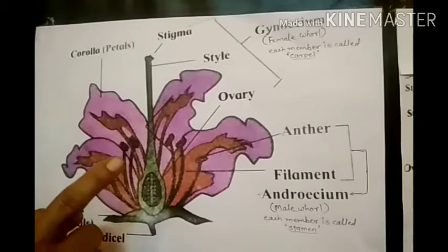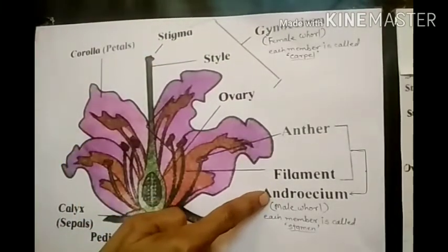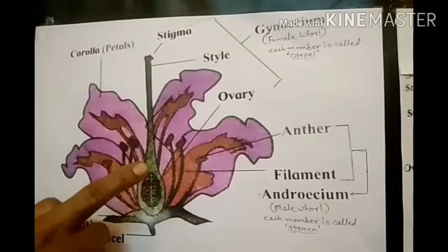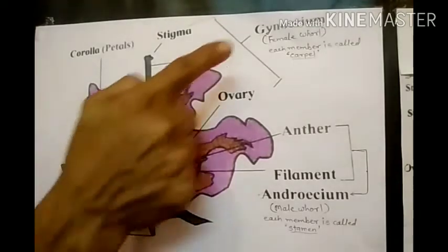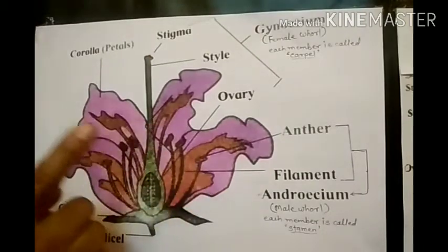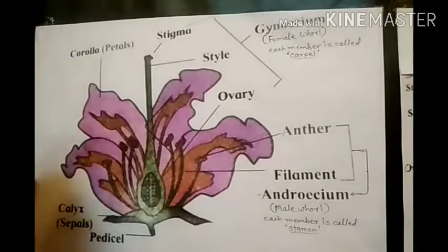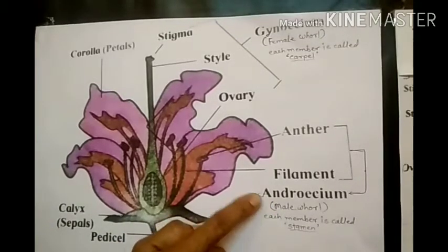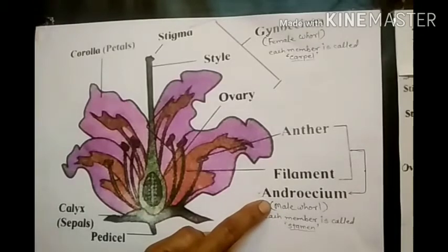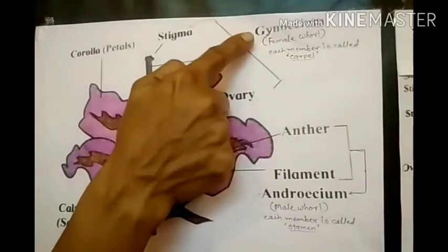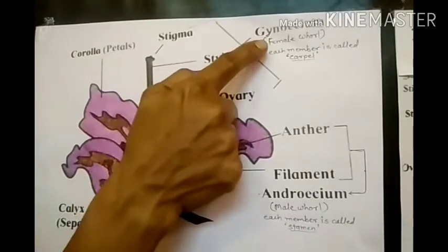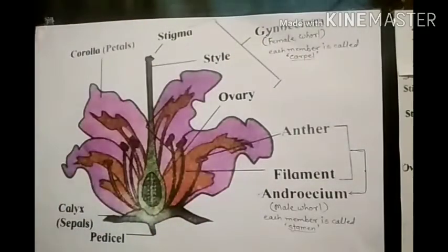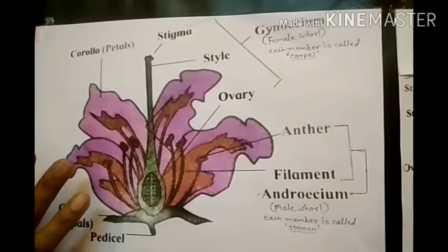When a flower contains both the male whorl and female whorl, that flower is called a bisexual flower. When only one of these two is present, it is called a unisexual flower. When only the androecium is present, that is a unisexual male flower. When only the gynoecium is present, it is a unisexual female flower. These are the parts of the flower.